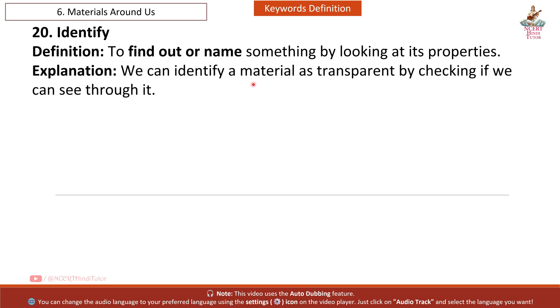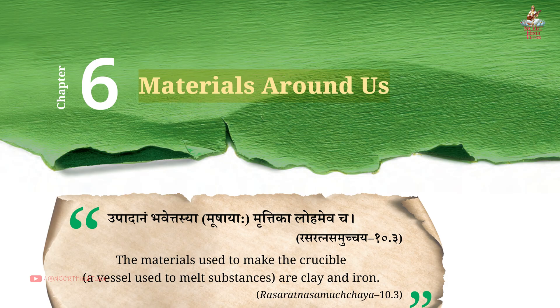So friends, we have completed short notes, summary and keywords definition from Chapter 6, Materials Around Us. We have already studied the question answers of this chapter. You can find the link in the description and on the screen. If you want MCQs of this chapter, kindly write in the comment box, then I will make a video of it. If you like the video, kindly like it and share it with your friends. Also subscribe to my channel. We will meet in the next video. Thank you for watching.